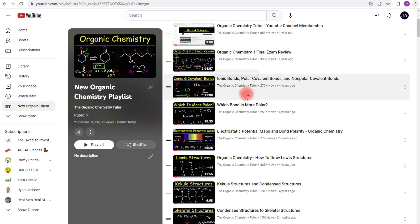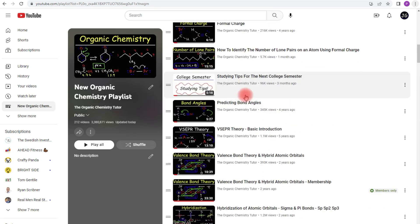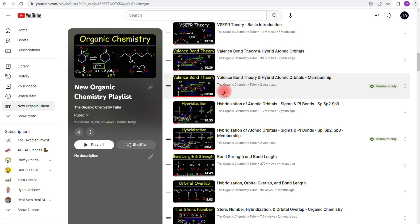But now you not only get that video, but you also get other videos as well. So like this video on valence bond theory, you get access to the full version, which is about 33 minutes long, compared to the free version, which is 10 minutes long. And you could see it here.